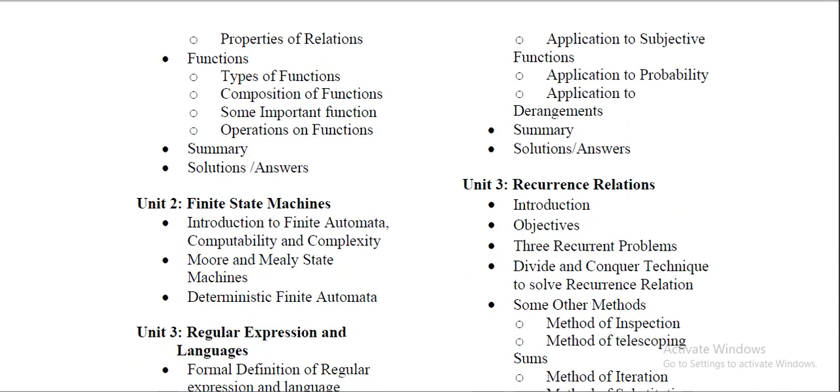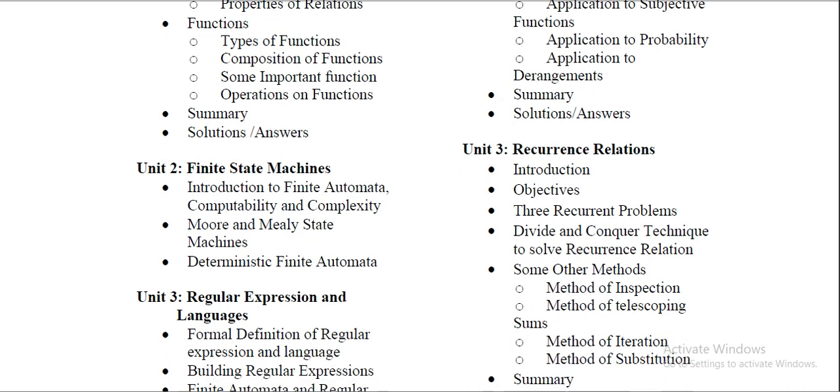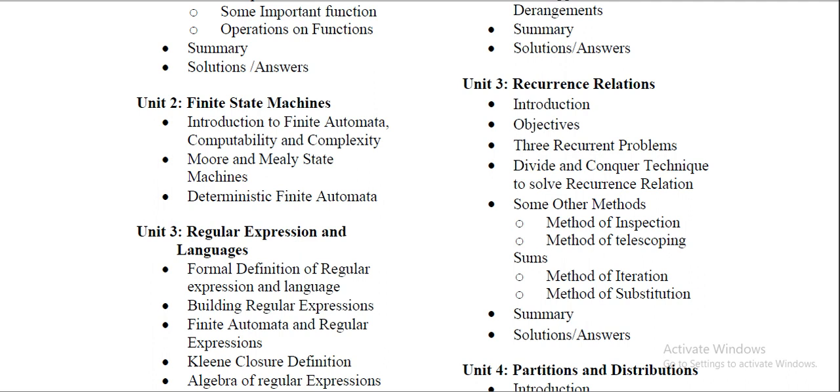Now the next important topic which is very very much important is your finite state machine, and as this is the automata. So here Mealy and Moore state machines are very much important because at least two questions are asked from this Unit 2. First, either they have asked you about the Moore machine or Mealy machine. And there are little bit difference between these two, and I will explain in the upcoming video sessions when I will start with MCS-212. So I will explain these topics in details, and the deterministic finite automata is the next important topic from this unit.